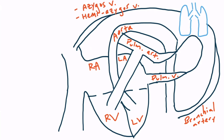Let's talk about the pulmonary circulation first. The pulmonary circulation is just the blood supply to the alveoli. In green, I'll show blood going from the right ventricle through the pulmonary artery to the lungs and to the alveoli, and then ultimately returning to the left atrium through the pulmonary vein. So as you can see, the pulmonary circulation goes from the right ventricle to the left atrium.